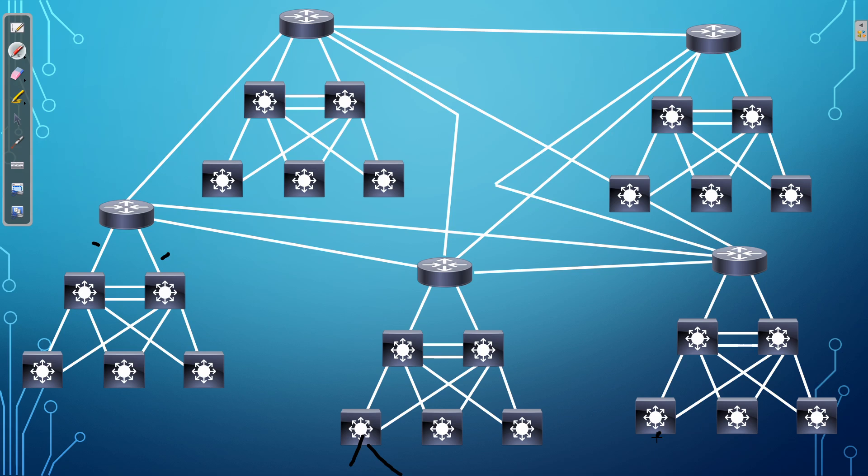This is where dynamic routing protocols can help. What dynamic routing protocols do is allow these devices — and this requires every single router or layer three device to be configured with a dynamic routing protocol — to talk to each other. They work out what networks they know about and what networks they are connected to, and they exchange all this routing information. So now, every single layer three device, router, and layer three switch will know about every single network that exists in your enterprise.